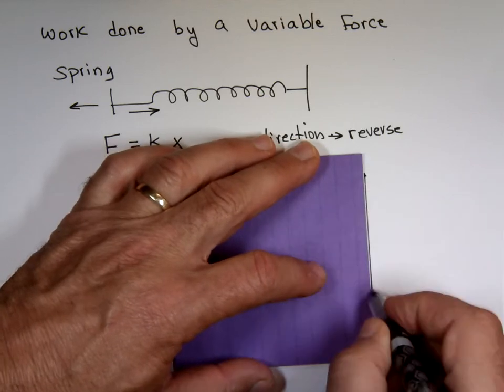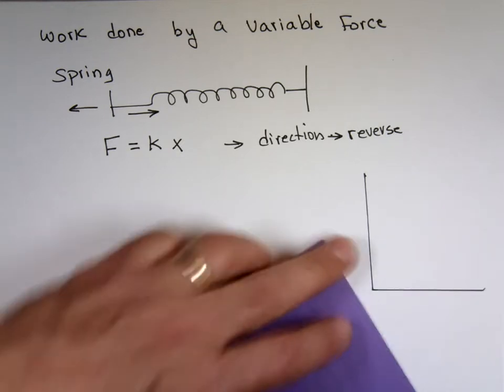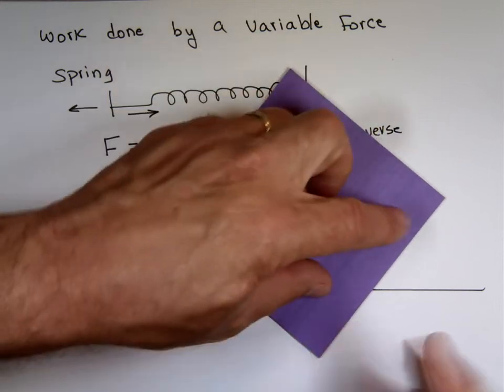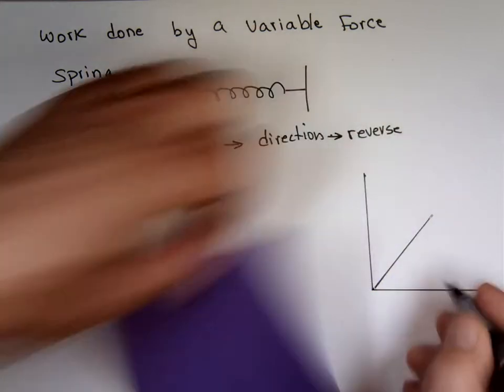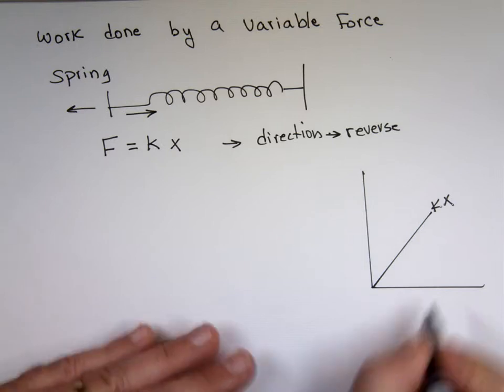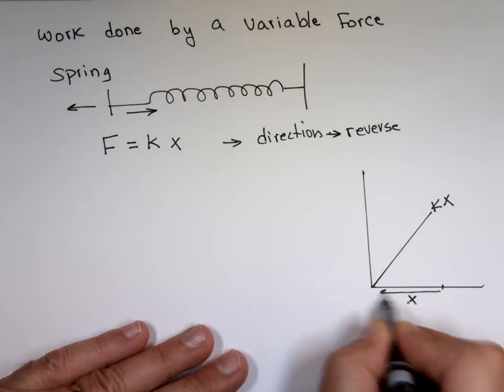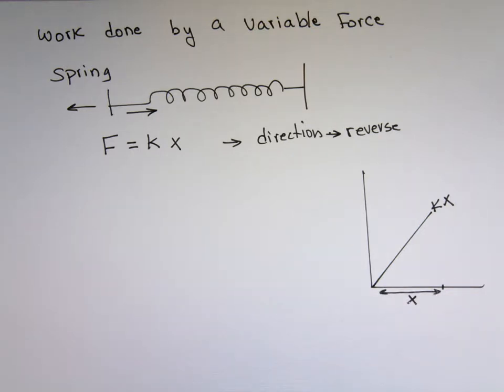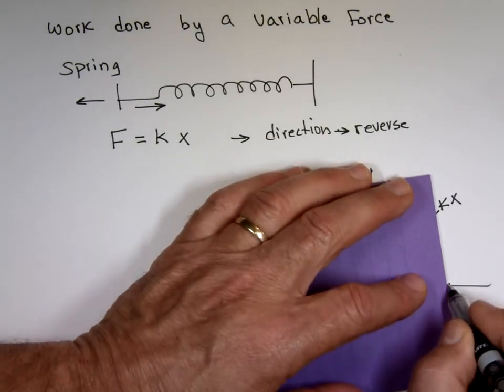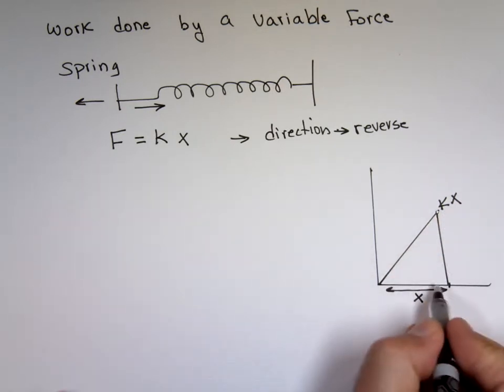It will look something like this. So if I stretch that spring by a value of x, this is x here, that distance, x. You stretch it by x. Then, if you find the right value for that, when this is equals x, you plug it in. And this height is really k times x. Well, the work is really this area, the size of that area.